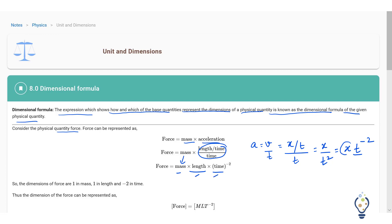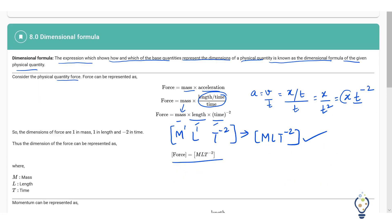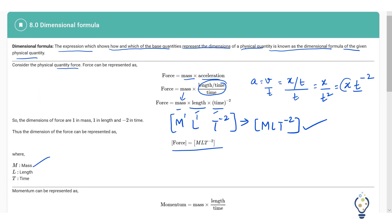So instead of mass we write M, instead of length we write L, and time we write T. The power of M is 1, the power of L is 1, and the power of T is minus 2. Since we are dealing with dimensions, we add square brackets. So we can write it as MLT⁻². This is our dimension formula for force, where M is mass, L is length, and T is time.